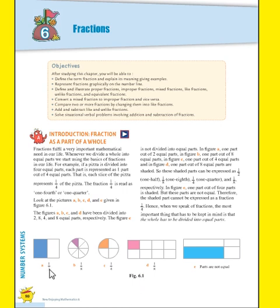Yahan pe hum parts ko divide kiye hain — two parts mein, eight parts mein, four parts mein. But figure E, yah jo last wala figure hai, figure E is not divided into equal parts. Yahan pe hum usko equally divide kiye nahin. In figure A, one part out of two equal parts; in figure B, one part out of eight; in C, one part out of four; in D, one part out of eight equal parts are shaded.